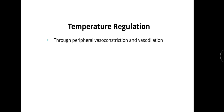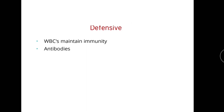Temperature regulation mainly happens through peripheral vasoconstriction and vasodilation. Vasoconstriction reduces blood supply to the surface of the body, reducing heat loss, while vasodilation increases blood flow to the body surface and heat is dissipated. Blood also provides immunity — we have a separate chapter for that and will discuss it there.